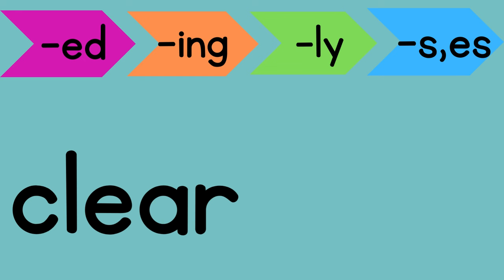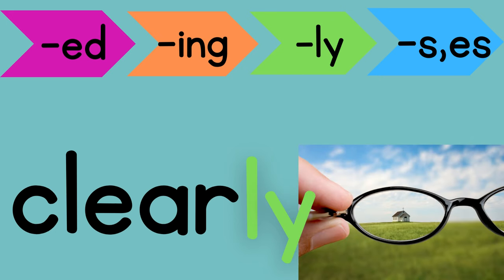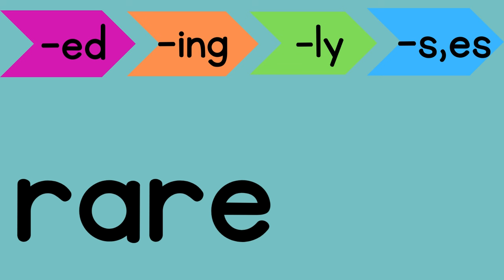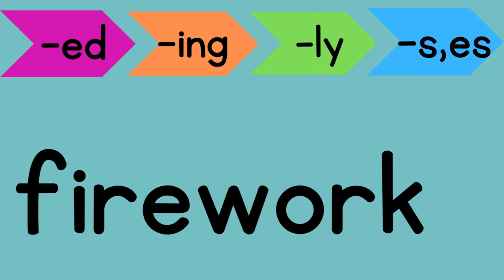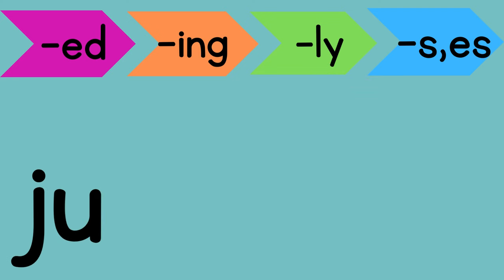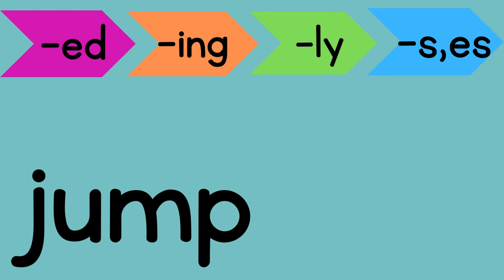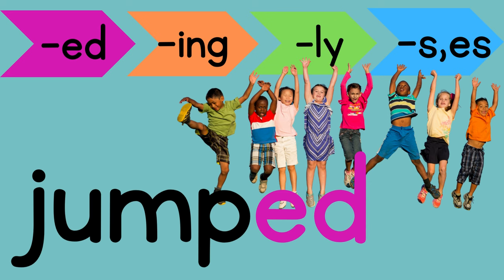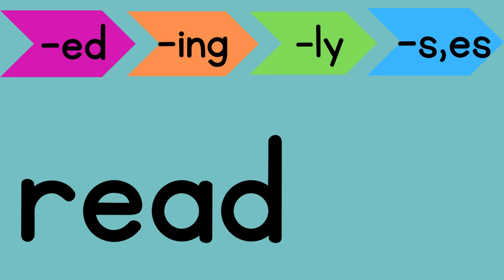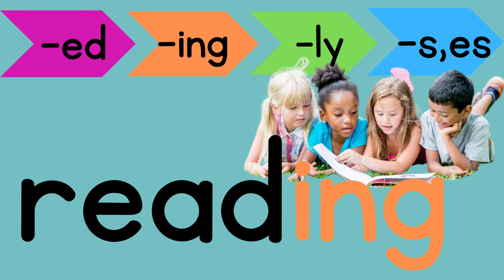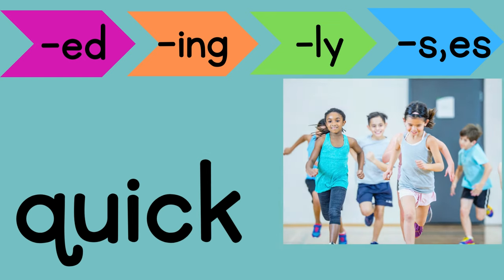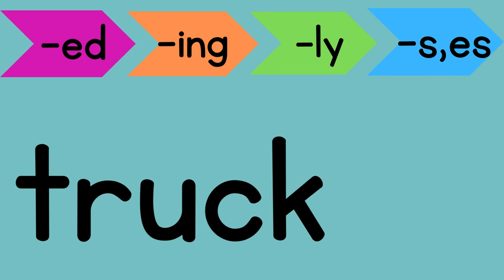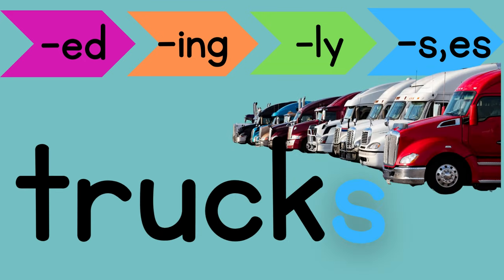Clear: which suffix should we add to mean that you saw something this way? Clearly. Rare: which suffix goes with this word? Rarely. Firework: which suffix do you add to mean more than one? Fireworks. Jump: which suffix makes it mean you already did it? Jumped. Read: which suffix means you're doing it right now? Reading, or reads. Quick: what suffix should we add here? Quickly. Truck: which suffix do we add to mean more than one? Trucks.